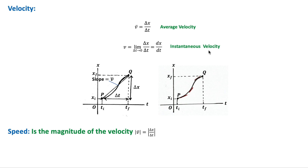The average velocity describes the overall motion over a time interval, but for more detail we use instantaneous velocity, which corresponds to the velocity at a particular instant of time. It involves allowing delta t to approach zero, so the instantaneous velocity is the derivative of x with respect to time. Geometrically, it is the slope of the tangent to the position-time graph at that point. Speed is the magnitude of the velocity — displacement over time — and differs from average speed because it does not depend on the path taken.